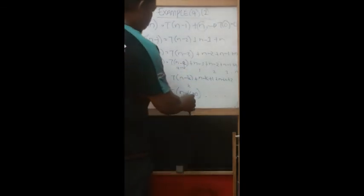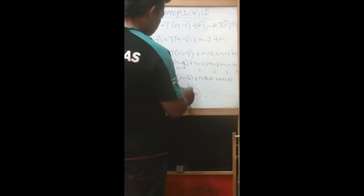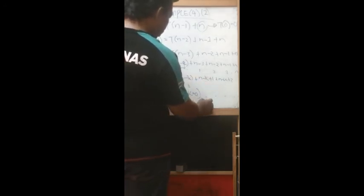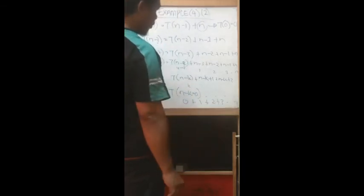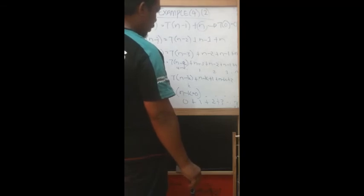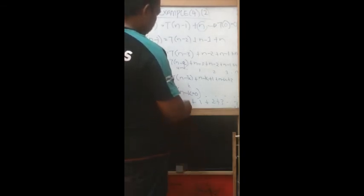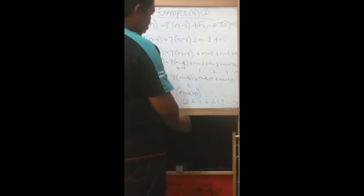This ends up with 0 plus 1 plus 2 plus 3 until n, correct? We can map this to summation formula number 2. Look at formula number 2.